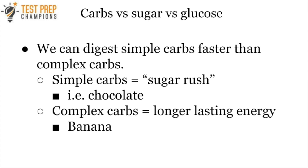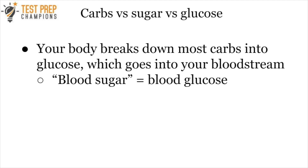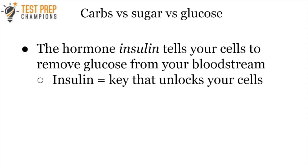Complex carbs raise your blood glucose levels for longer and provide more sustained energy than simple carbs. Your body breaks down most carbs into glucose, which then goes into your bloodstream — so blood sugar levels and blood glucose levels are the same thing. There's a hormone called insulin that acts like a key, unlocking your cells so they can take in glucose from the bloodstream.